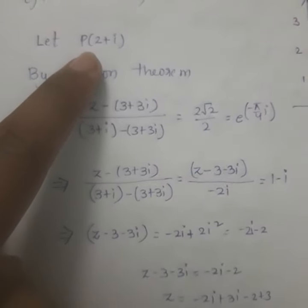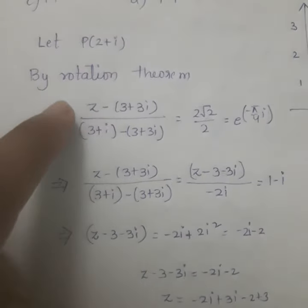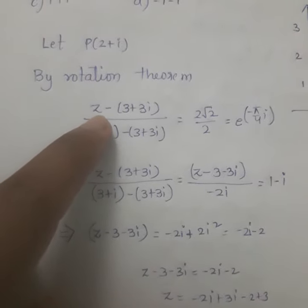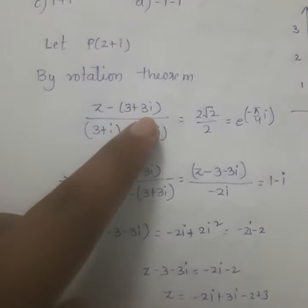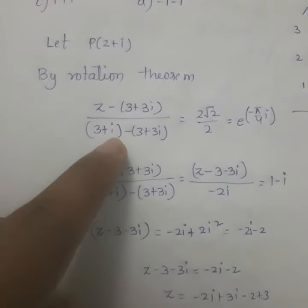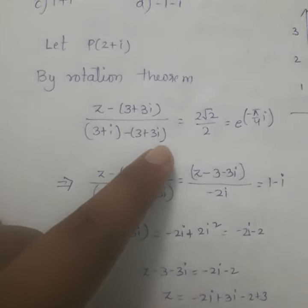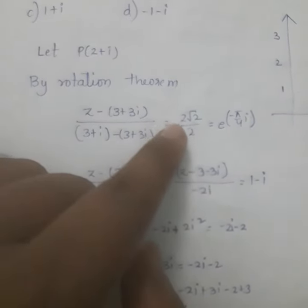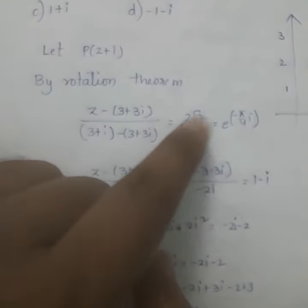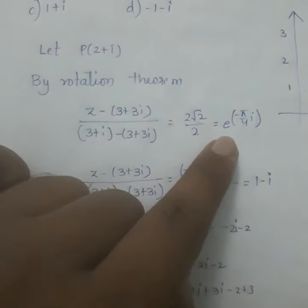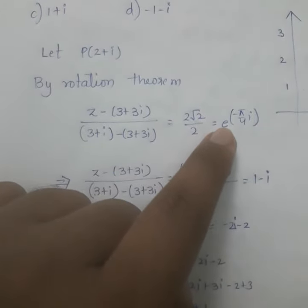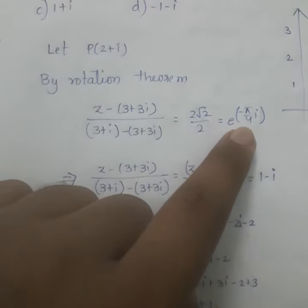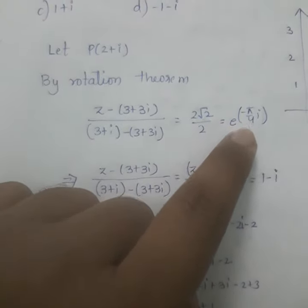So I will be getting P is nothing but P of 2 plus i. Now I am applying rotation theorem. When I am applying rotation theorem to this, I will be getting z minus (3 plus 3i) divided by (3 plus i) minus (3 plus 3i). The rotation theorem value is 2 root 2 by 2. When we are representing in complex number, I will be getting e to the i times e to the (minus pi by 4).